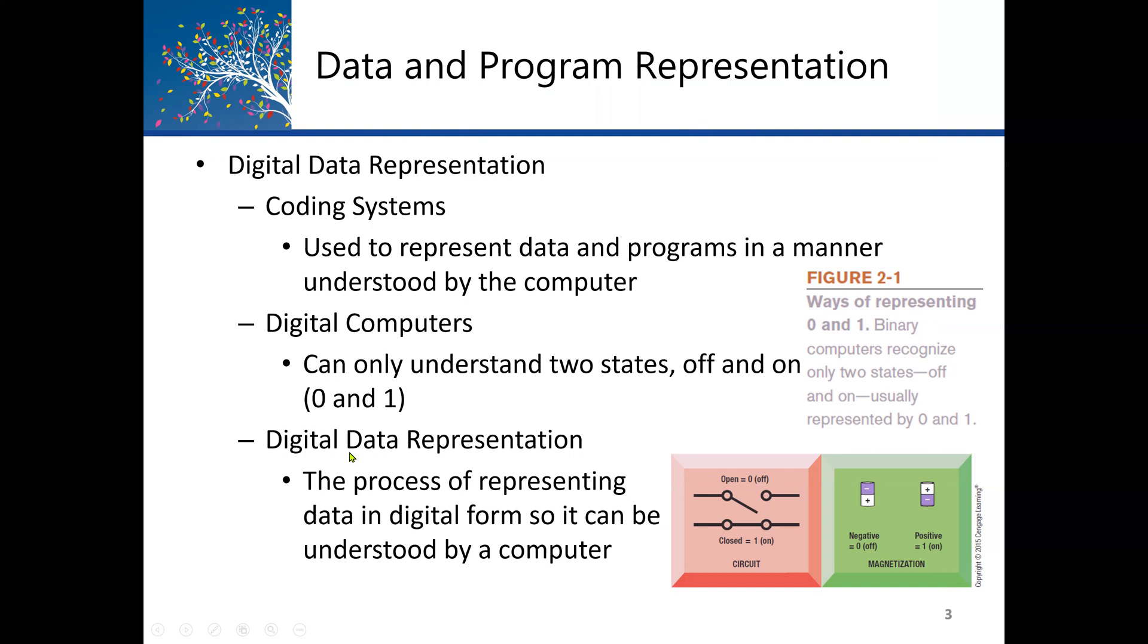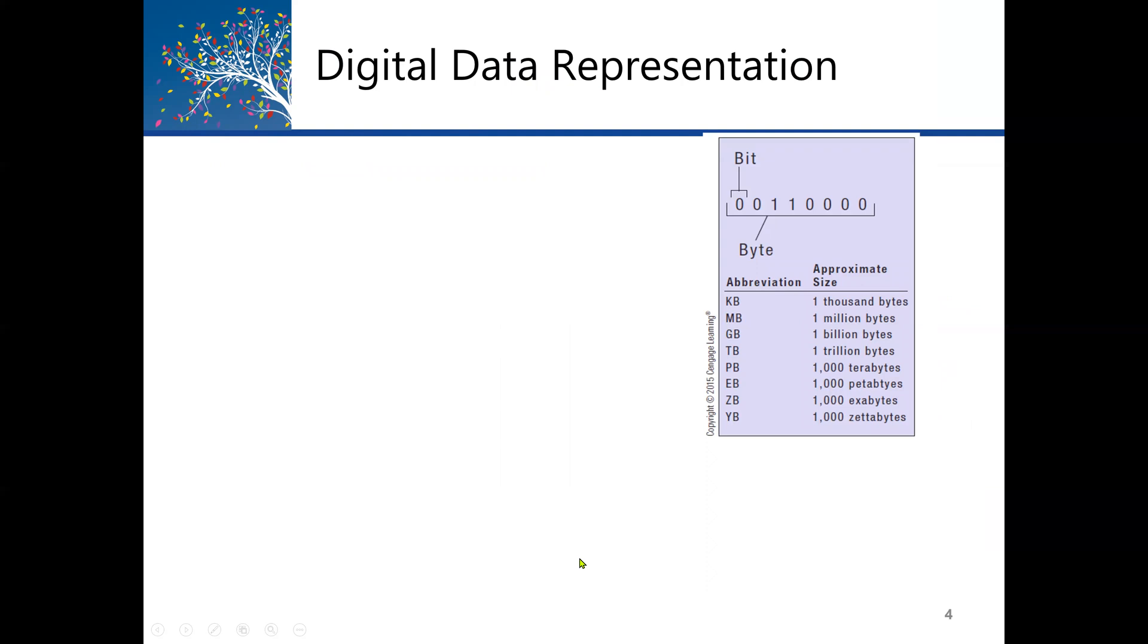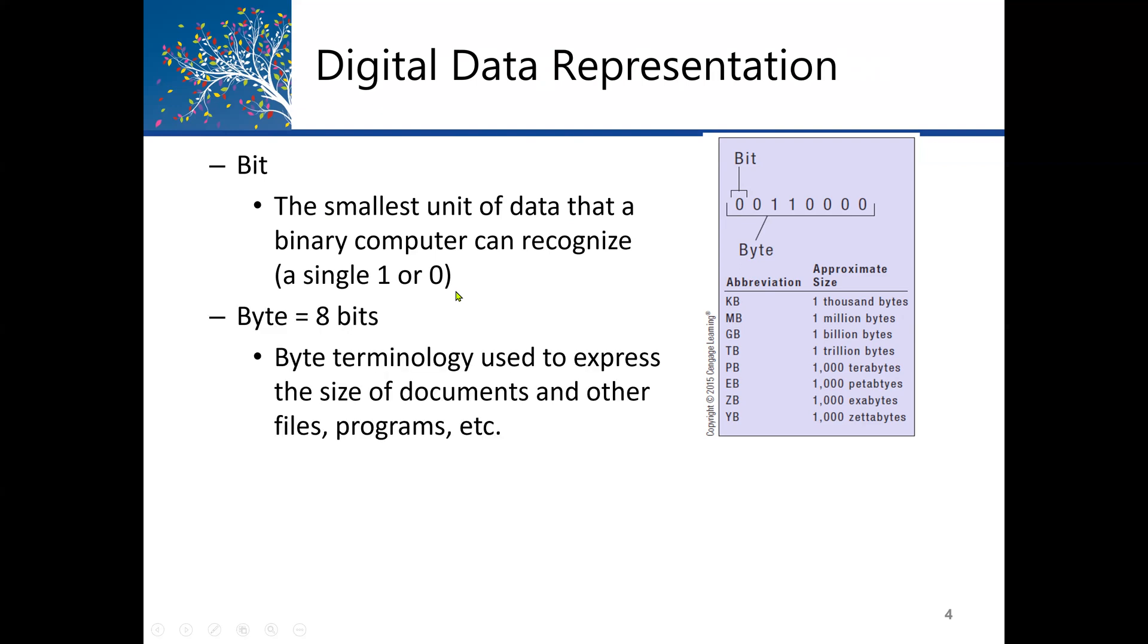Digital data representation is the process of representing data in a digital form so that it can be understood by a computer. A bit is the smallest unit of data that a binary computer can recognize, a single one or zero. A byte equals eight bits. Byte terminology is used to express the size of documents and other files, programs, etc.